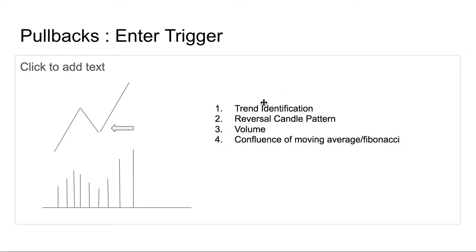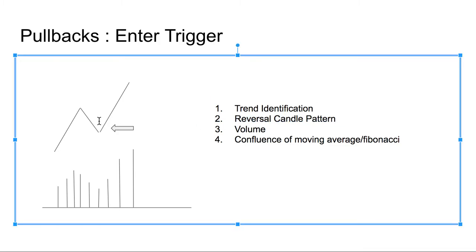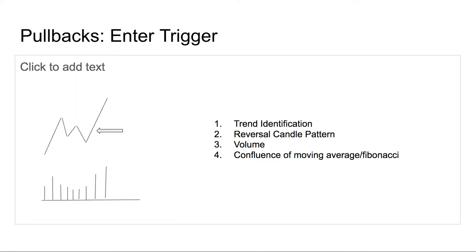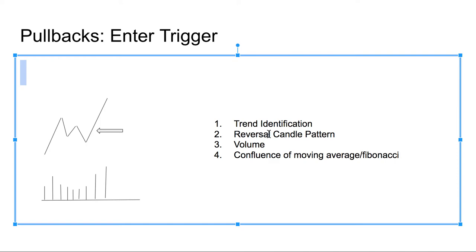Just because there is a trend doesn't mean you buy right away — you want to see a couple of things. You definitely want to see a reversal candle pattern, such as an inside bar or a pin bar. You also want to see volume drying up during the pullback or consolidation, and then volume picking back up once the trend resumes. This applies to both the simple and the complex pullback patterns.